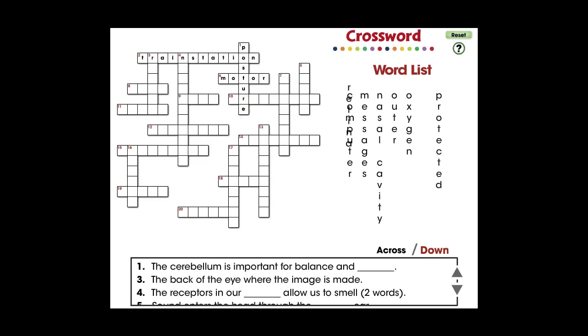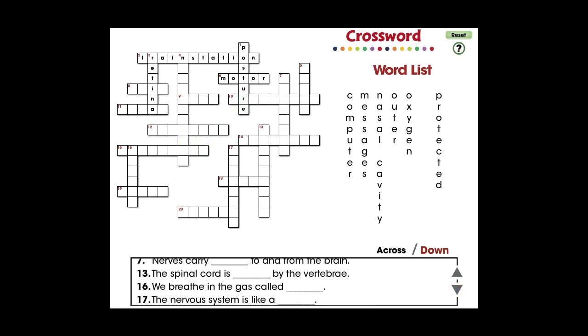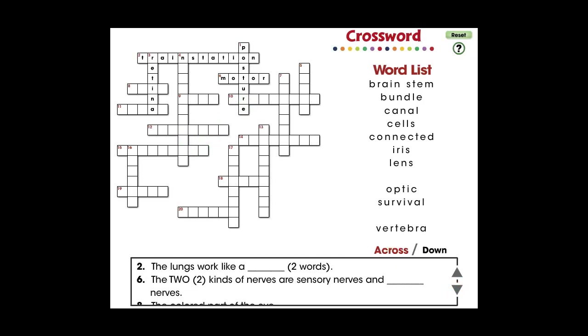Drag a word from the list to its correct position in the puzzle. Use the arrows to scroll through all the clues. Switch between across and down clues and words.